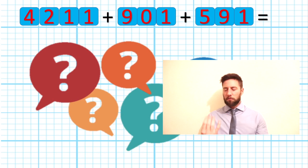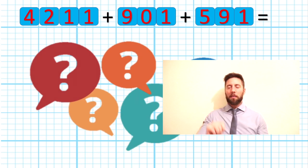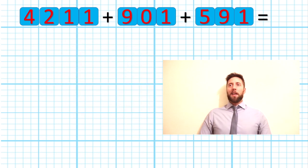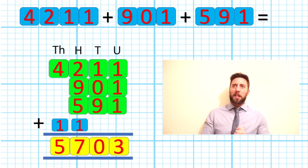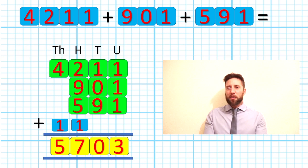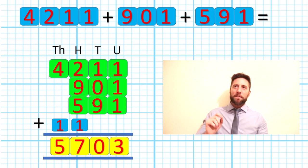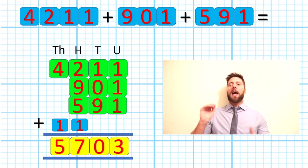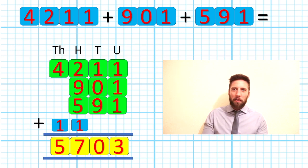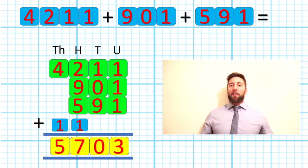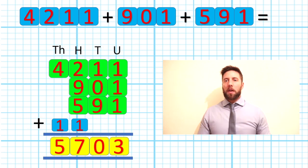Answer: 4,211 add 901 add 591 equals 5,703. I had to squint - I wrote that really small on the wall over there, I couldn't remember it. Well done if you got that right. You have mastered this lesson. Well done, very, very well done. I'm proud of you all.